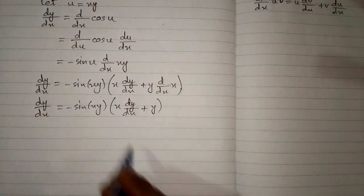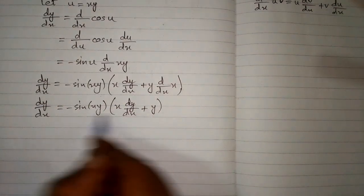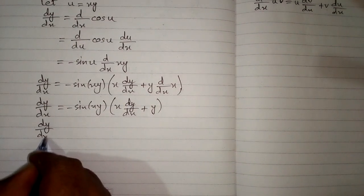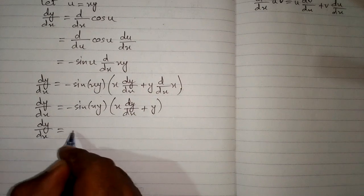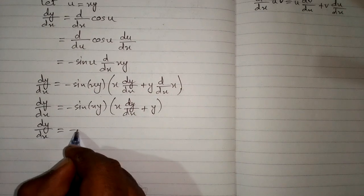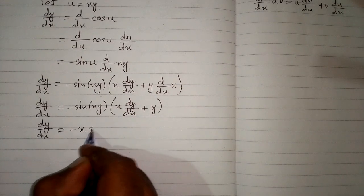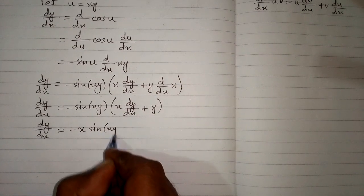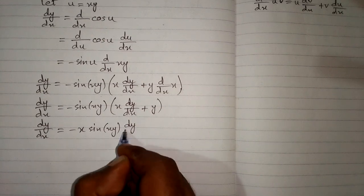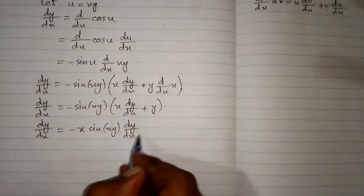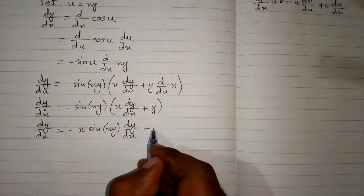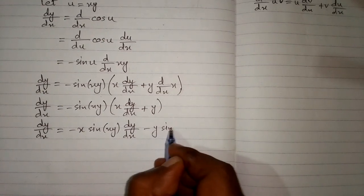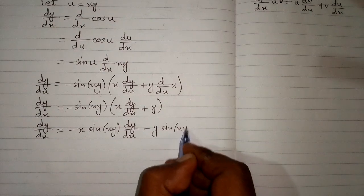Now we open this bracket, so we have dy/dx = minus x times sine(xy) times dy/dx, minus y times sine(xy).